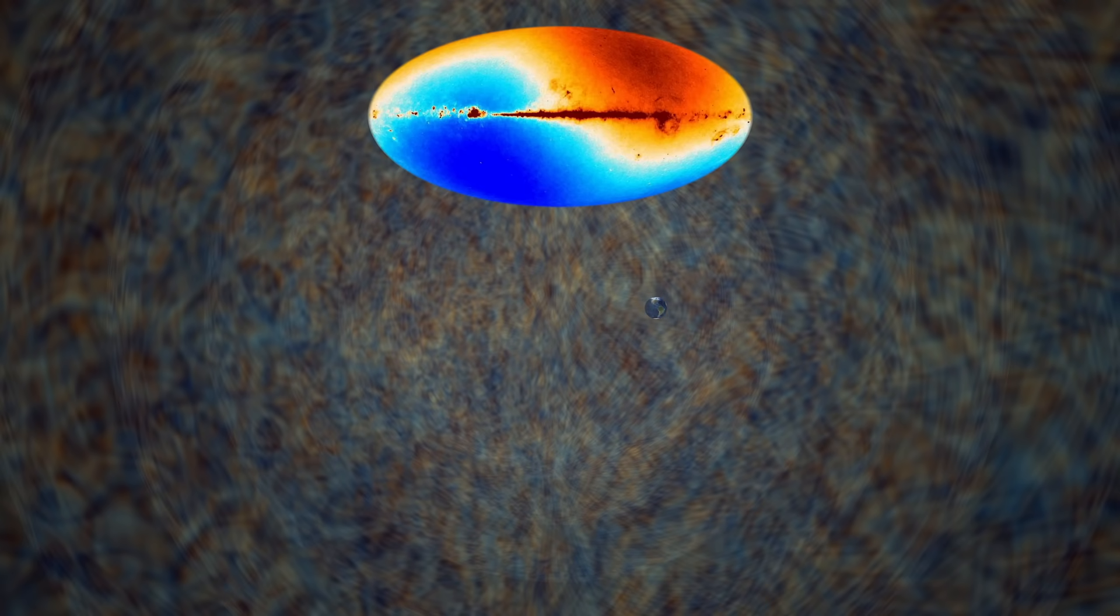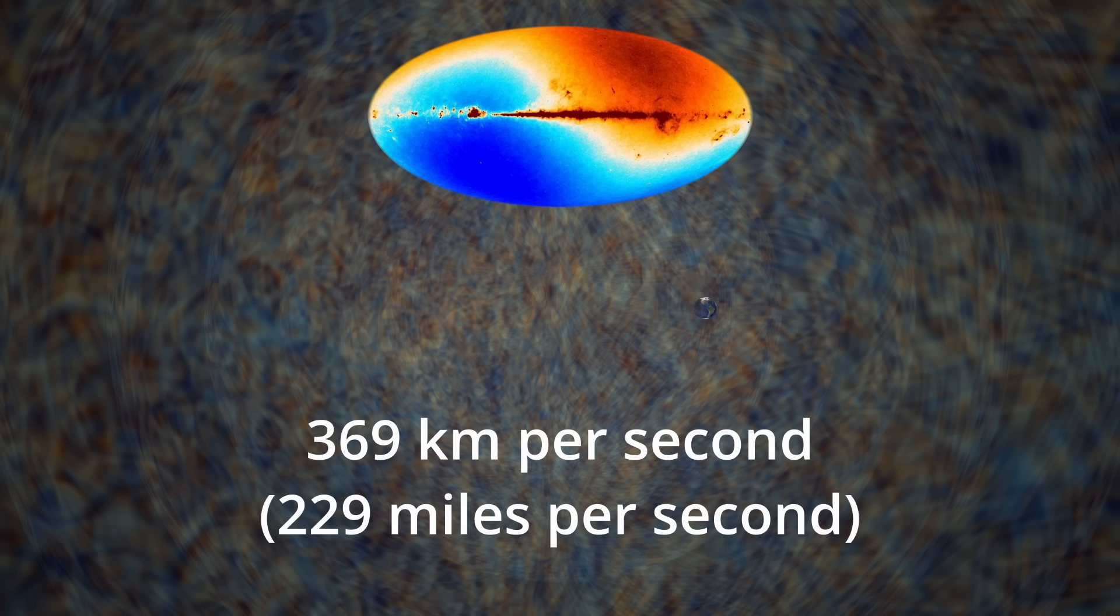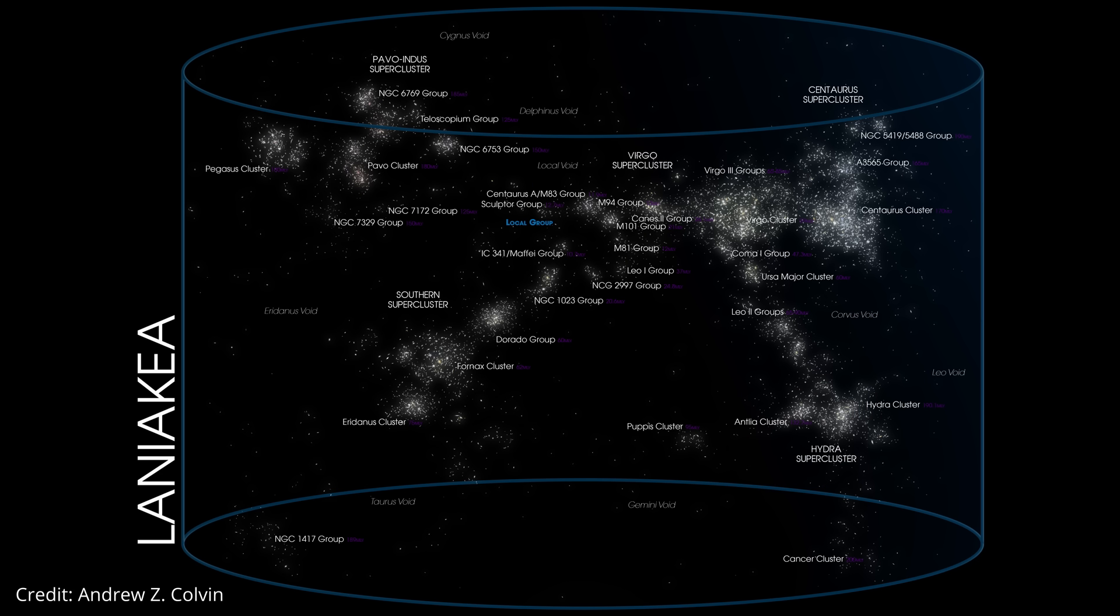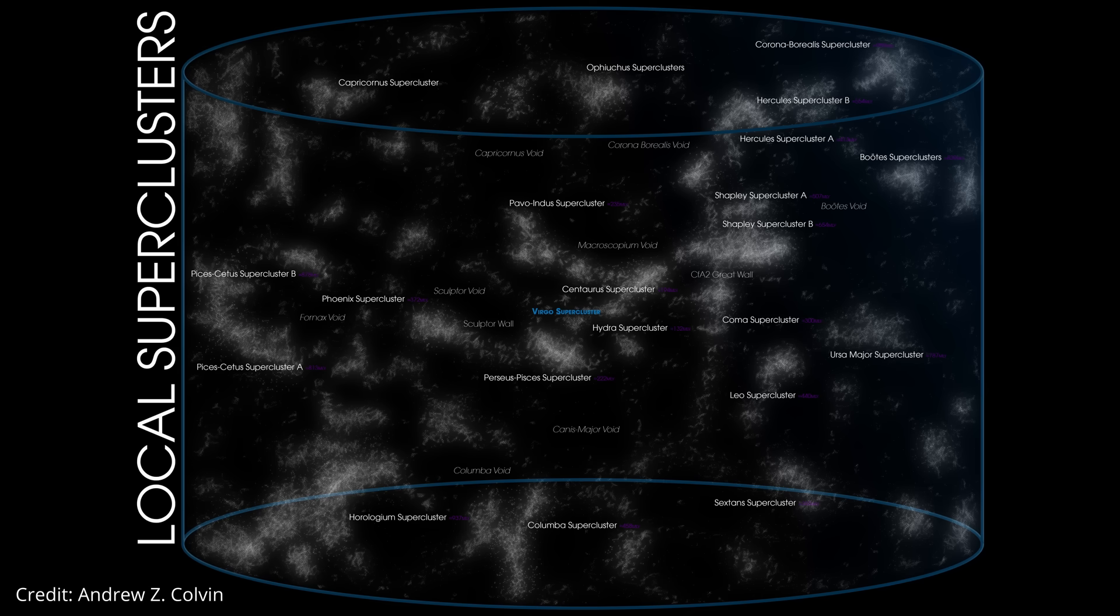So when you measure the dipole, you're meant to be measuring our true velocity through the universe. Planck puts that at about 369 kilometers per second, and that value becomes the anchor point for everything else. But that interpretation only works because of another idea that the model takes for granted, the assumption that on the larger scales, the universe is statistically isotropic.